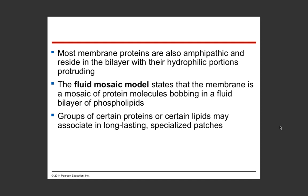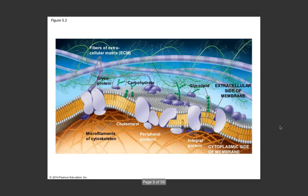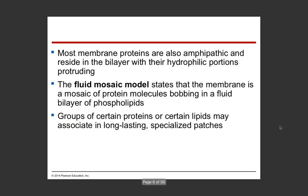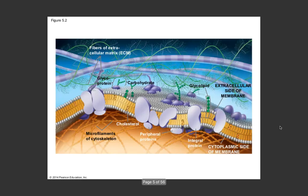Our cell membrane follows the fluid mosaic model. Fluid means it's not rigid - it's flexible. A mosaic has a whole bunch of different pieces, and obviously the membrane has many pieces. The fluid mosaic model states that the membrane is a mosaic of protein molecules bobbing in a fluid bilayer of phospholipids. These components don't have to stay where they are - they're very loosey-goosey. Phospholipids can shift around and proteins can move laterally, side to side, throughout the membrane. We are in a cell membrane, not a cell wall, which is much more fluid and flexible.